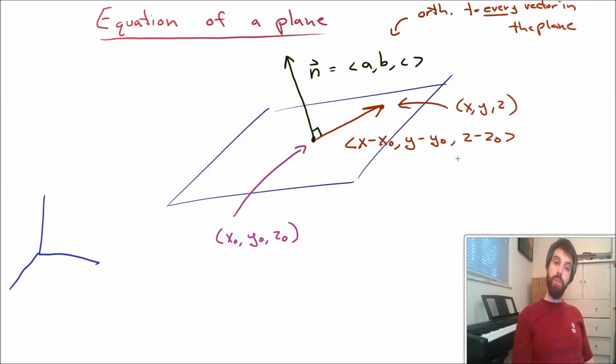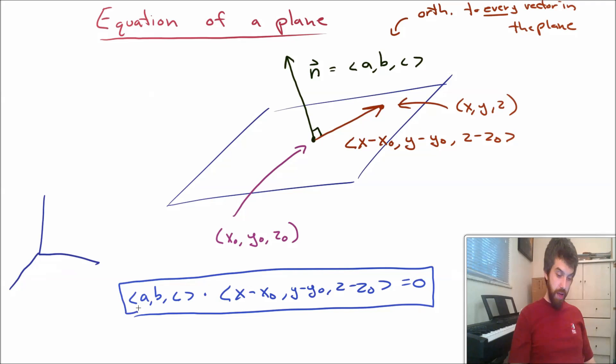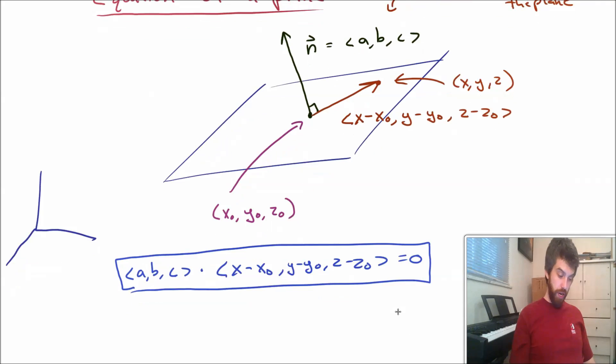And then the claim about it being normal is that the vector ABC, that's my normal vector, dotted with this vector X minus X naught, Y minus Y naught, and Z minus Z naught, is that these are normal, or in other words, equal to zero. So that is my vector equation of the plane.